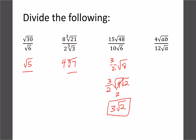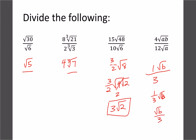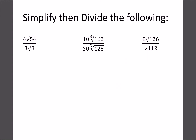The last example has variables but the same rules apply. 4 divided by 12 is 1/3, and root ab divided by root a gives root b. You could write it as 1/3 root b, or as root b divided by 3 — those are all the exact same thing, just different ways of writing the fraction.